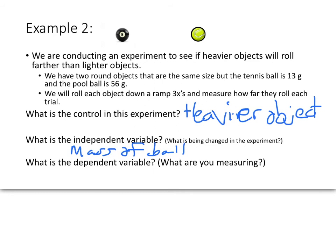What's the dependent variable? What are we measuring here? If you think about it, we're going to roll the object down the ramp, and we're going to measure how far they roll. So that is our experiment with our control, independent, and dependent variable.